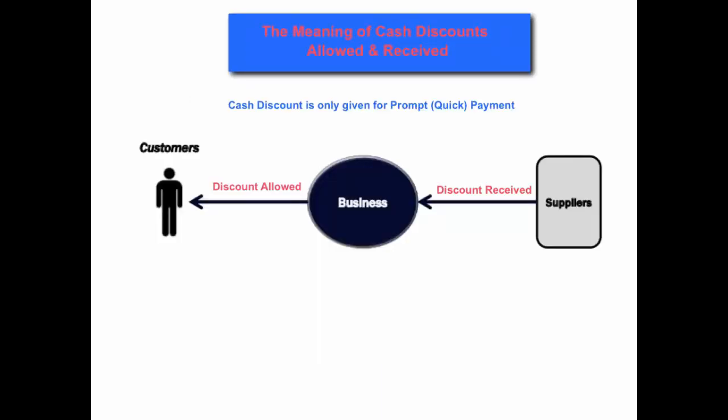Firstly, we need to understand the meaning of a cash discount allowed and received. A cash discount is only given for prompt or quick payment, unlike a trade discount which is given usually for bulk buying or buying in large quantities. A trade discount is taken off immediately from the amount owing on the invoice, so we only enter the final amount that is due and therefore there is no need to worry about the trade discount in terms of doing the double entry.